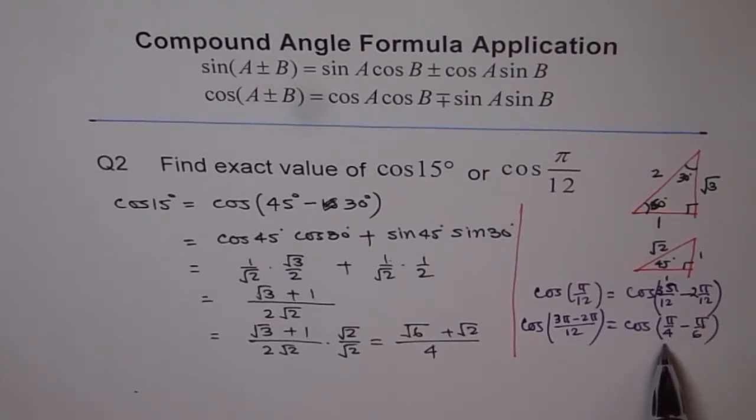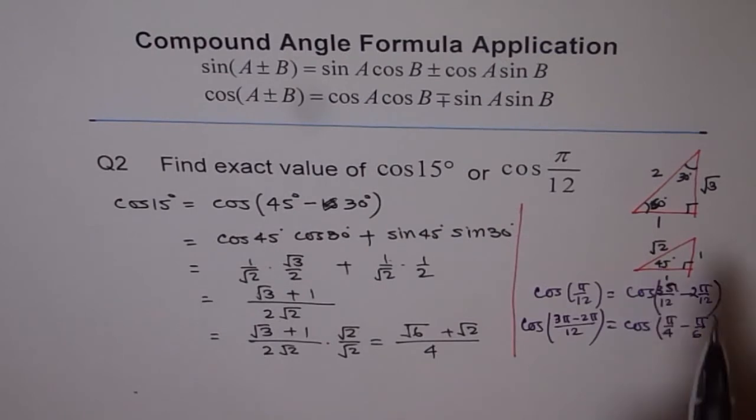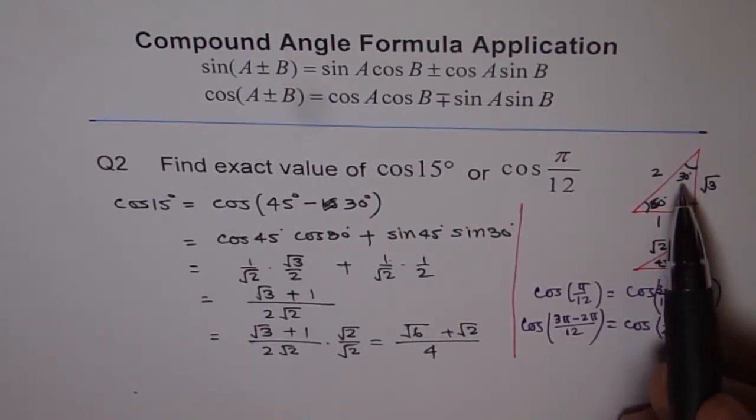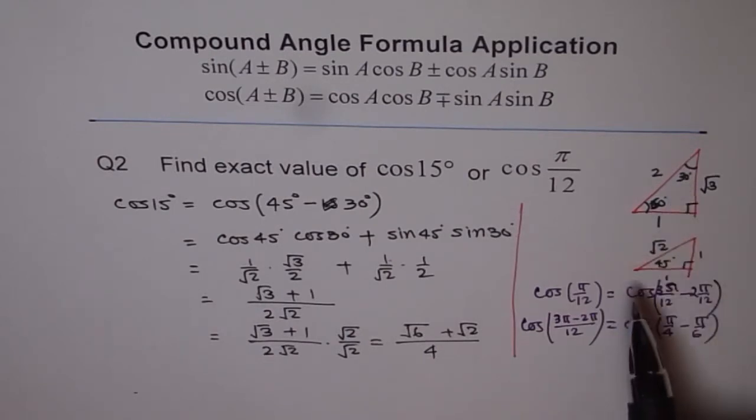And you know, pi by 4 is this triangle. That is 45 degrees. And pi by 6 is this triangle. Perfect. That is 30 degrees.